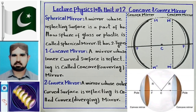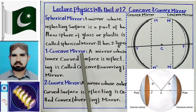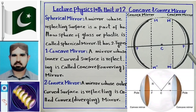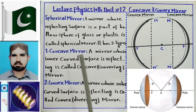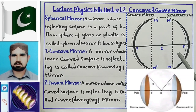Concave mirror और convex mirror। Diagram के अंदर आपको कुछ नजर आ रहा है। पहले हम define करते हैं concave mirror को — a spherical mirror whose inner curved surface is reflecting is called a concave mirror। अगर किसी spherical mirror की अंदर वाली सतह जो curved होती है वो reflecting हो तो ऐसे mirror को concave mirror कहते हैं।